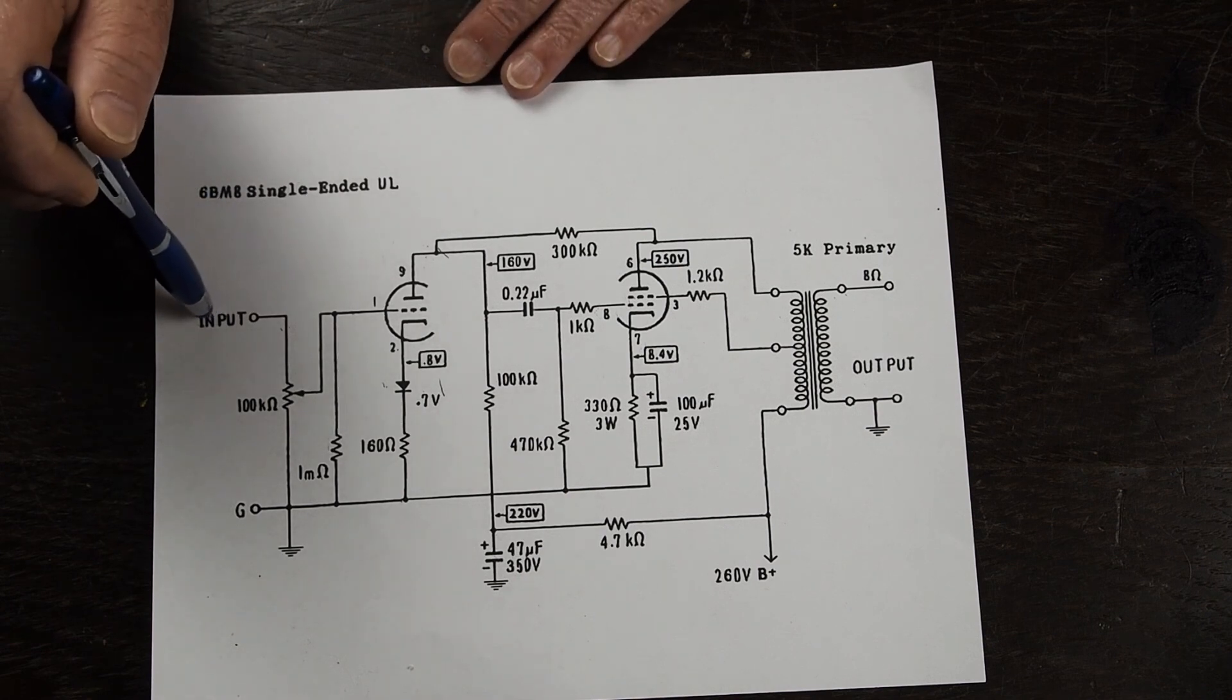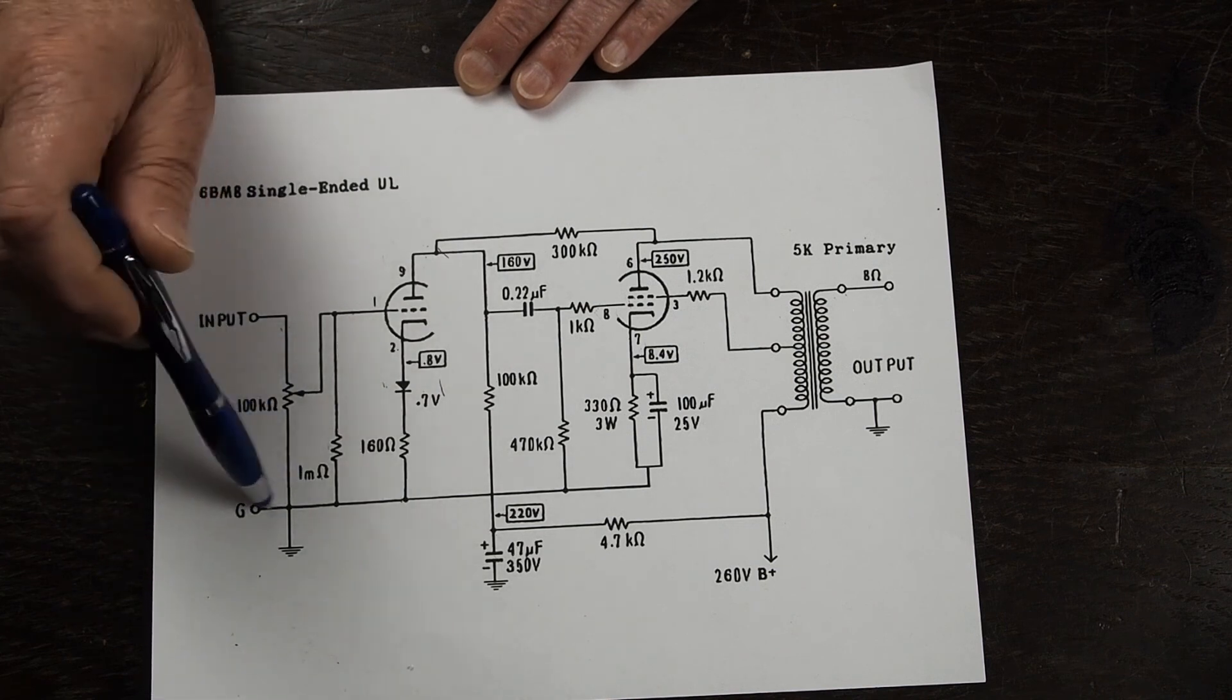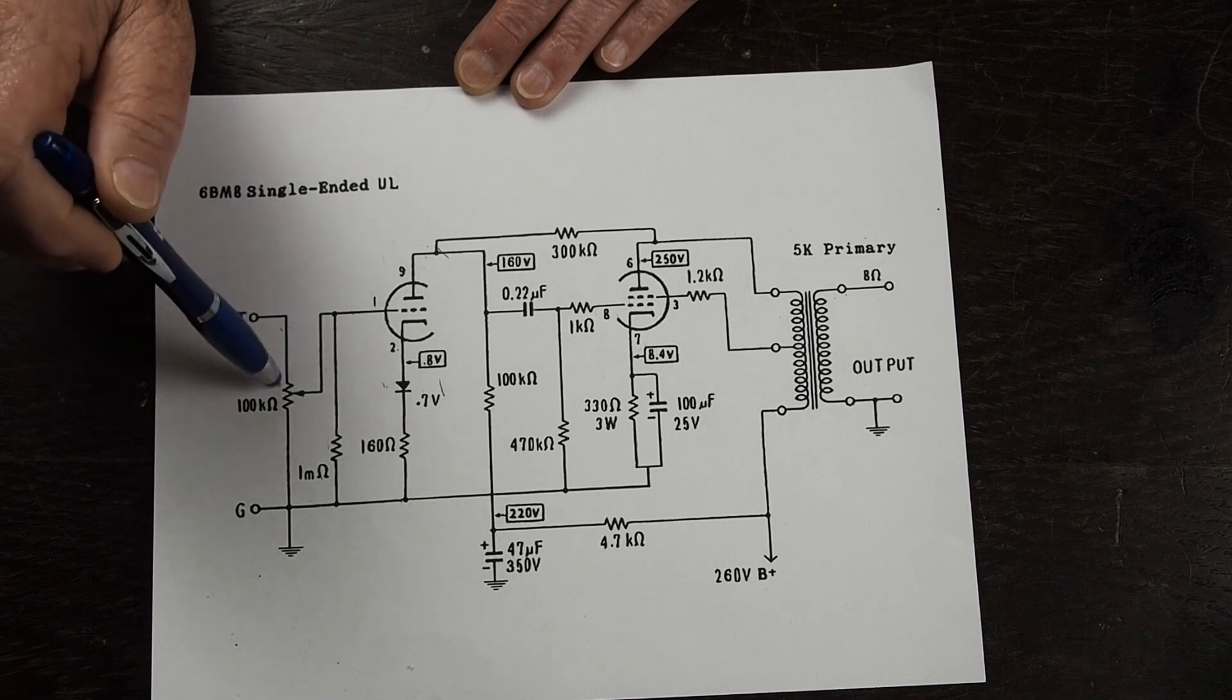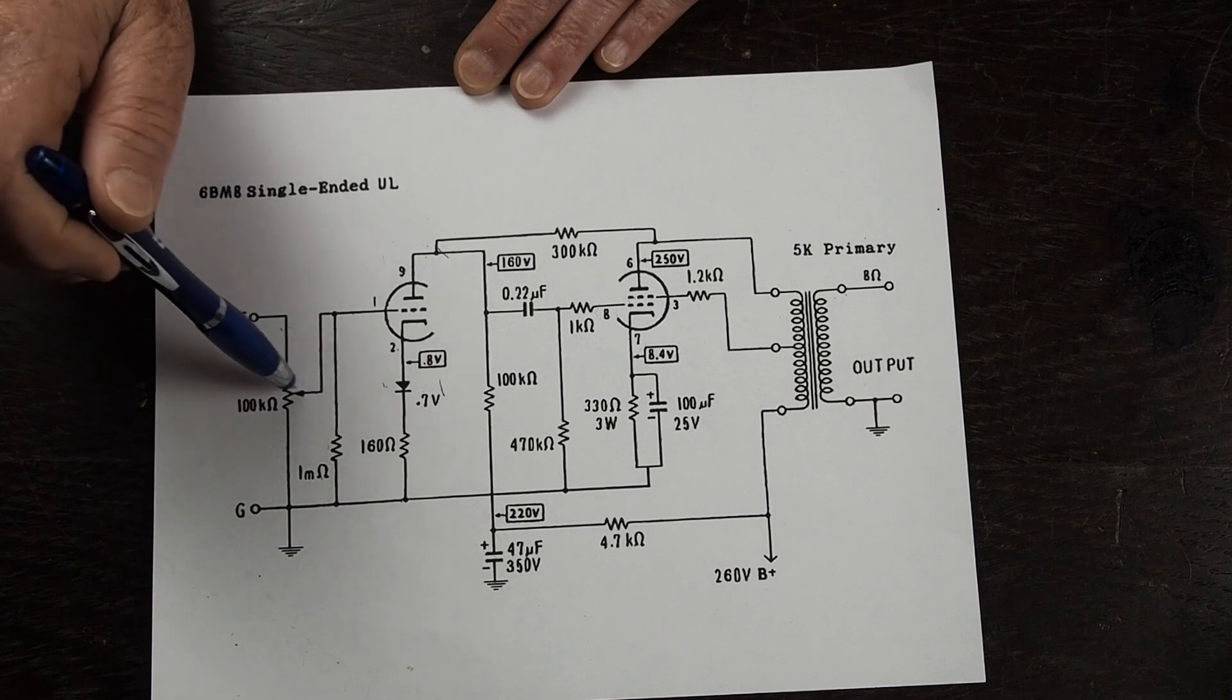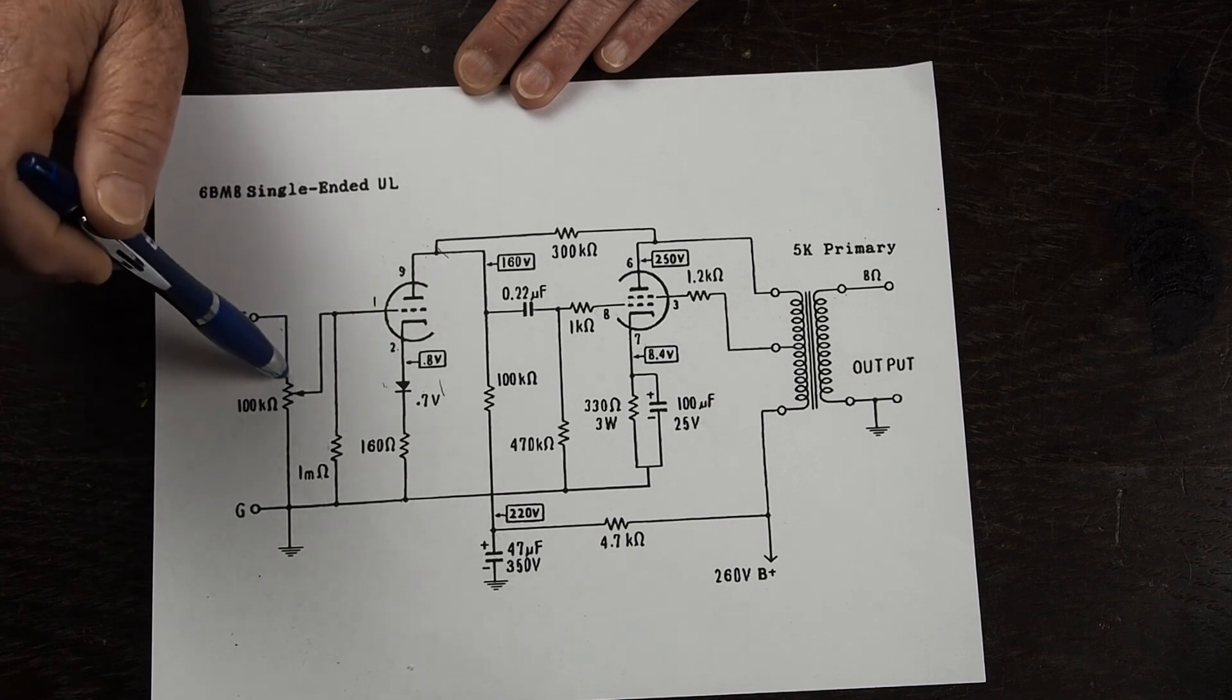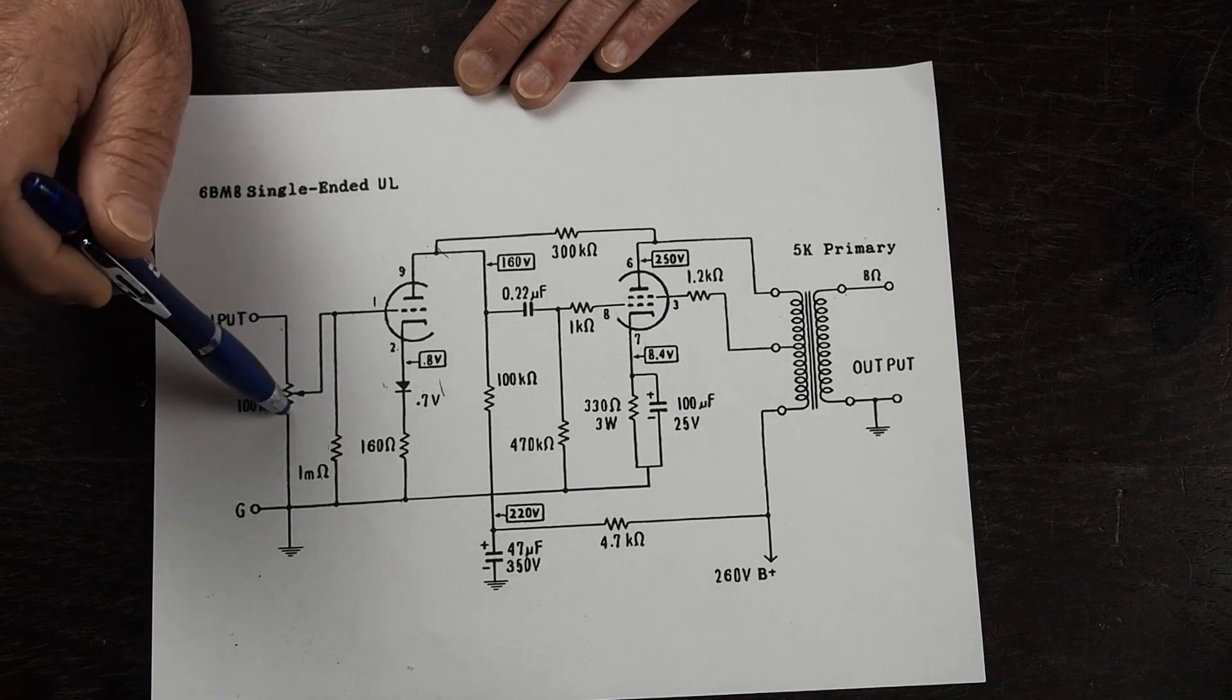The input comes in on here and here this is the ground for the amplifier and here's the positive on the input. It goes through this 100k audio taper potentiometer and as you move it to a louder volume it moves closer to this leg of the circuit being direct to the input and as you move it down in this direction it gets closer to ground which will make it quieter.